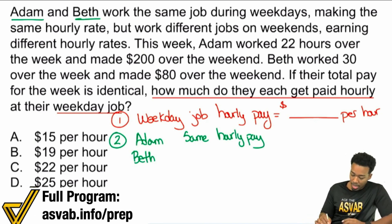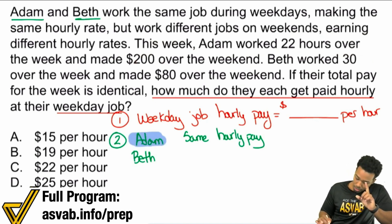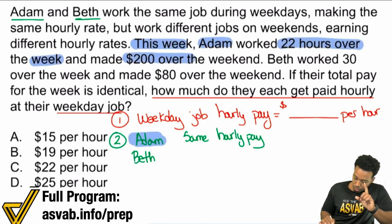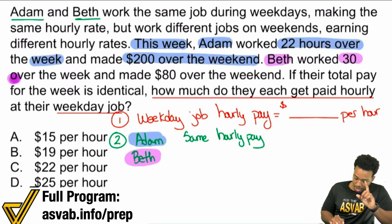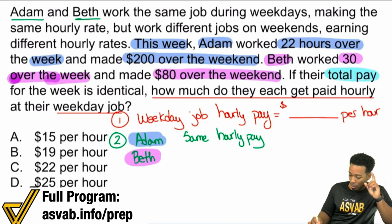No worries. Going ahead here, earning different hourly rates — this week Adam worked 22 hours over the week and made $200 over the weekend. Let me highlight Adam in blue. So this week: Adam, 22 hours over the week, $200 over the weekend. If I highlight Beth in purple — Beth, 30 hours over the week, made $80 over the weekend. If their total pay for the week is identical — whoa, that's a big one right here.